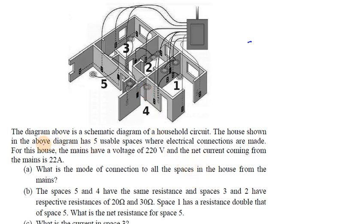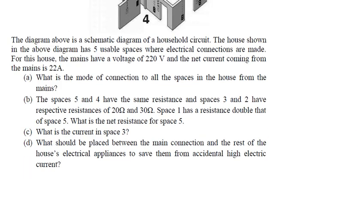The total net current is 22 amperes. For the first question: what is the mode of connection for all spaces in the house from the mains? Looking at the mode of connection, we can see the resistance arrangement — the connection is parallel.